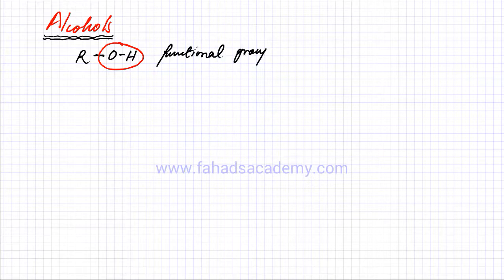The next homologous series we are going to name are called alcohols. We've previously learned how to draw the structure of an alcohol. An alcohol has an OH functional group which is attached to a molecule — let's say the molecule is R. This OH functional group is present in all alcohols. The rest of the molecule could be a carbon chain or anything, but if there's an OH group present, it's an alcohol. I'll give you a few examples first.